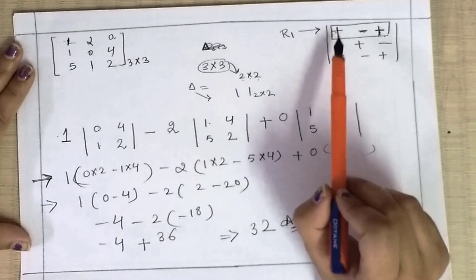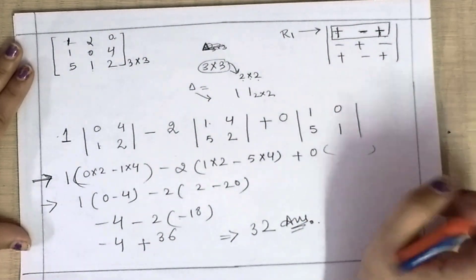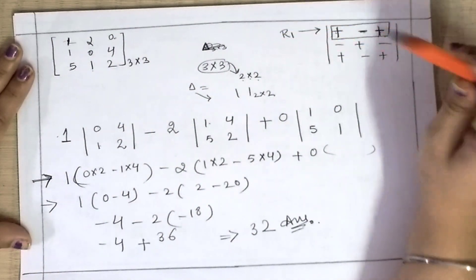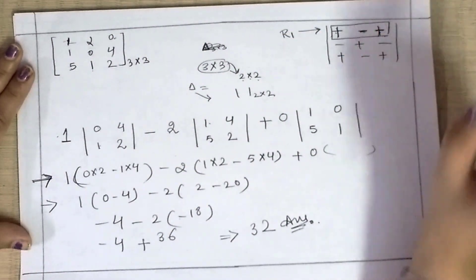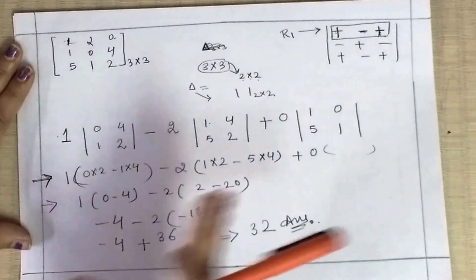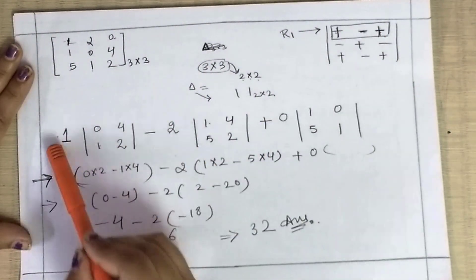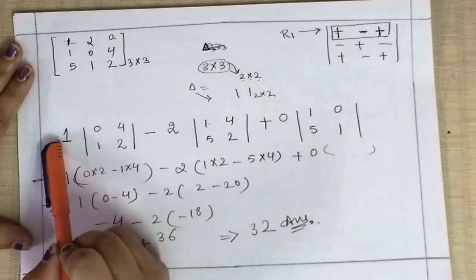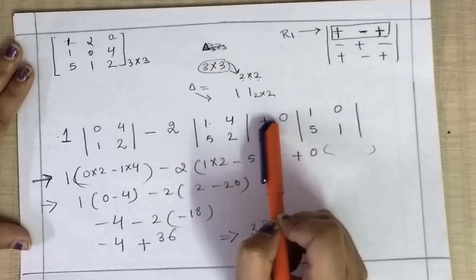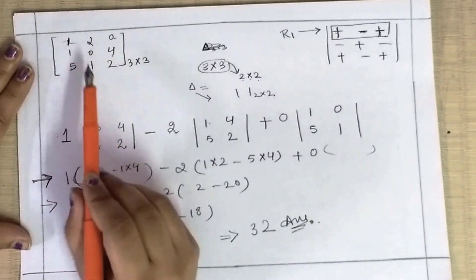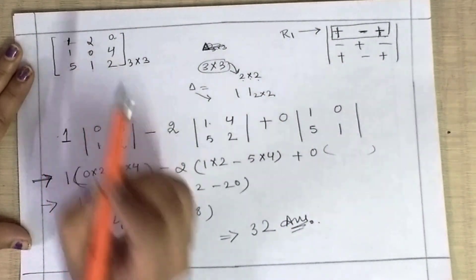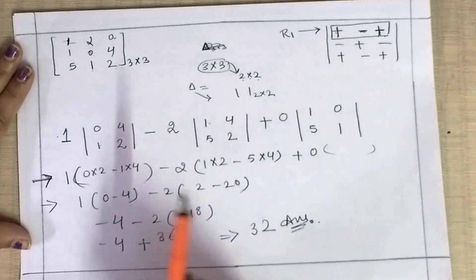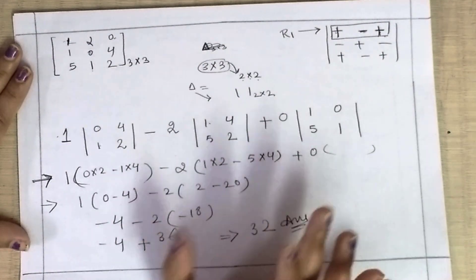Always pay attention to the sign. The first row has plus, minus, plus signs. So the first element gets positive, the second gets negative, the third gets positive. But if the element itself is negative — say minus 2 — then minus times minus is plus. So you need to keep attention to the sign while expanding the determinant.